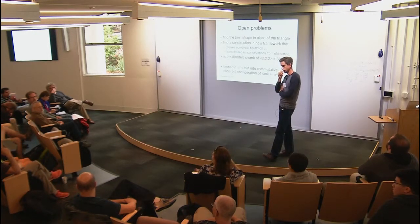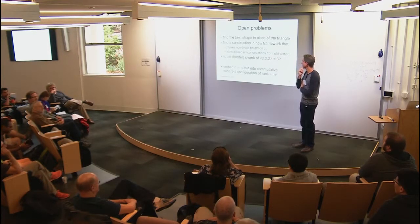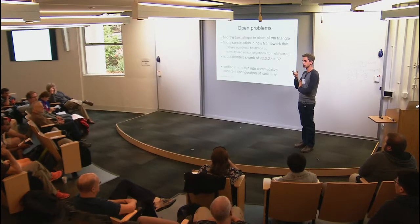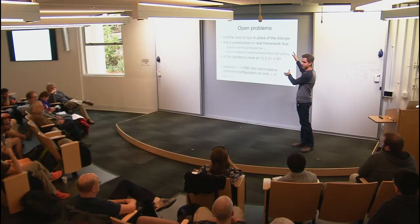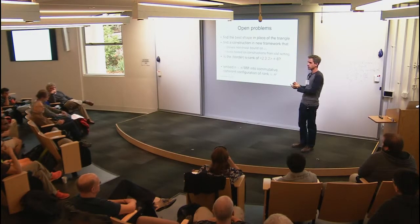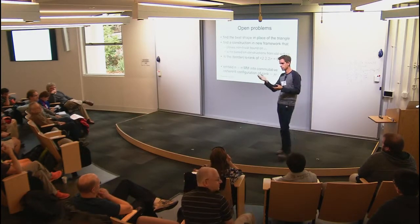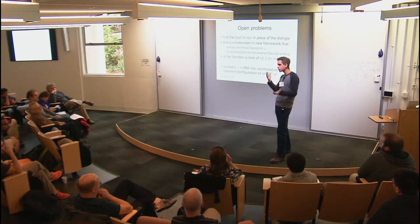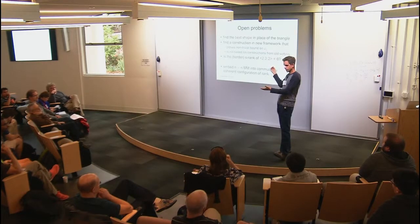Q&A: One questioner asked about the sunflower conjecture connection. There's a paper called 'Sunflowers and Matrix Multiplication' with Noga Alon and Amir Shpilka. One of the main combinatorial conjectures contradicts a non-standard version of the sunflower conjecture—a multicolored version of the cap-set conjecture in Z₃. That conjecture is about 50-50 among people, and the non-standard version is even less likely to be true, but it's a warning sign that the combinatorial conjecture may not hold.